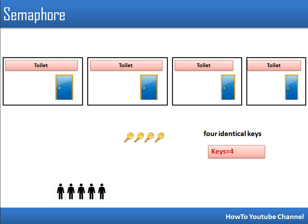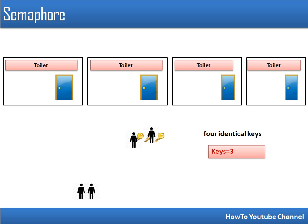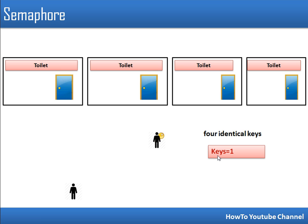Now if we look at semaphore, let's generalize our mutex example. Let's say we have four toilets and these four toilets have four identical keys — one key can be used in any toilet. We have five persons total. We keep track of the total number of keys available. A person picks one key and goes to a toilet. When he picks the key, the total keys left are three. After two more persons use the facility, we are left with one key.